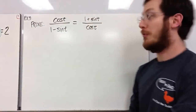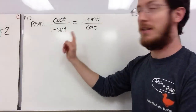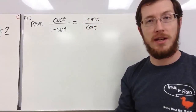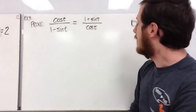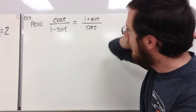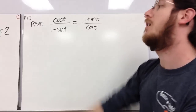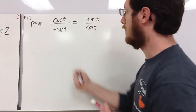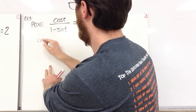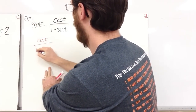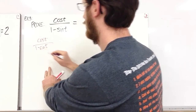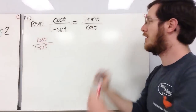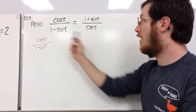Example three: prove that cos(t) / (1 − sin(t)) = (1 + sin(t)) / cos(t). Both sides look similarly complicated, so I'll just pick the left side and bring it down: cos(t) / (1 − sin(t)).